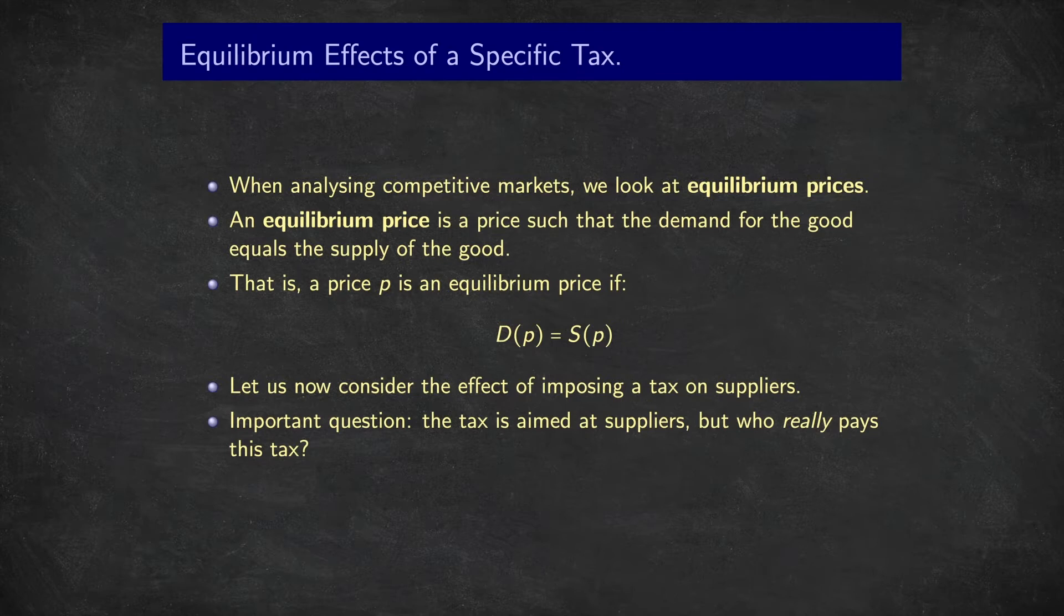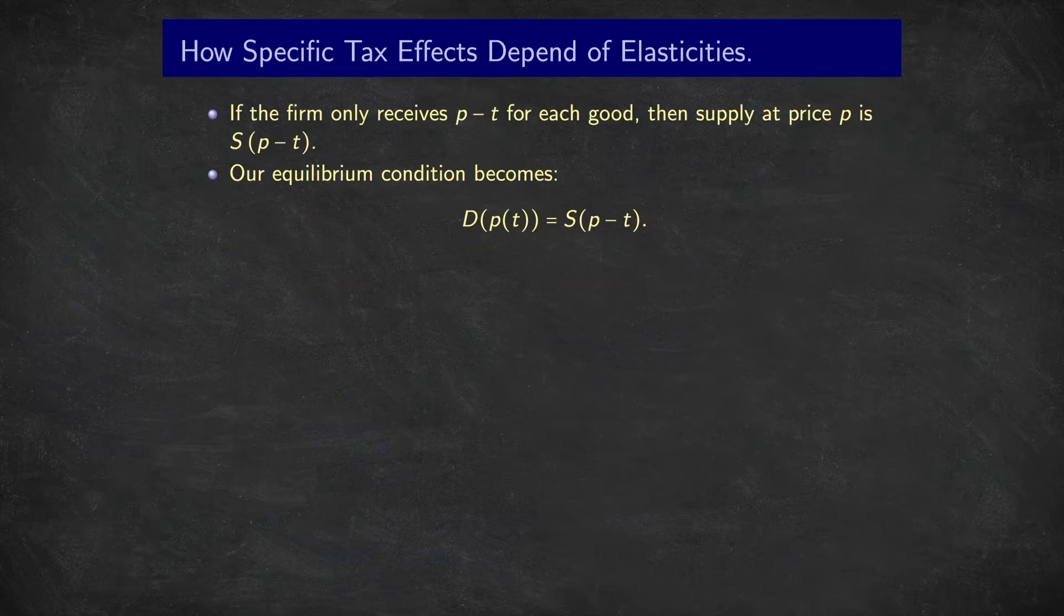Let's now consider the effect of imposing a tax on suppliers. Even if we aim the tax at suppliers directly, and we say to suppliers for every unit you sell you must pay us some tax, who really ends up paying this tax? If the firm only receives P-T for each good, which means we're taxing the firm directly for every unit they sell, how much are they willing to supply when the market price is P?